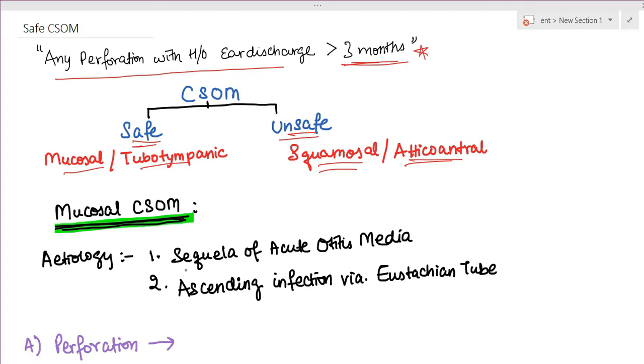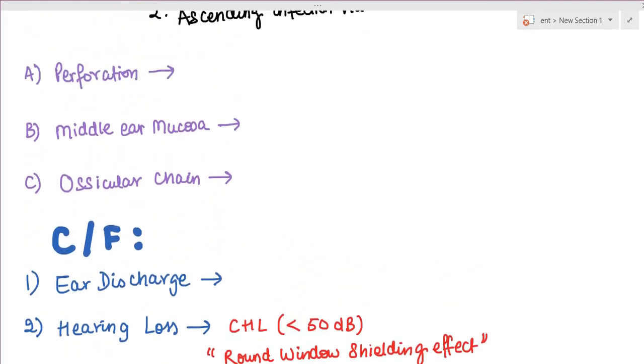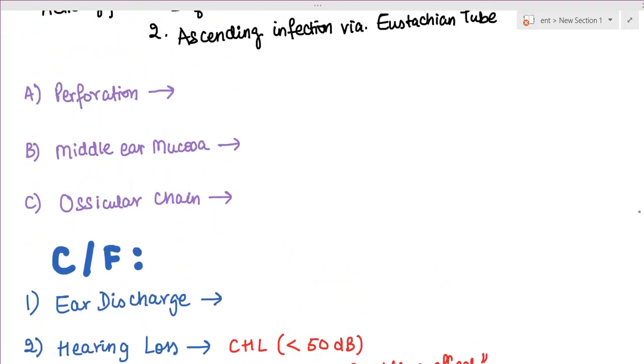Mucosal CSOM can be a sequela of acute otitis media or there can be ascending infection via the eustachian tube.